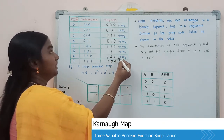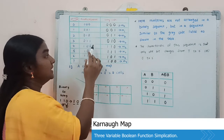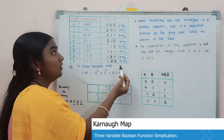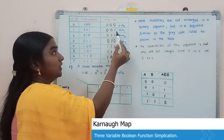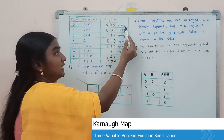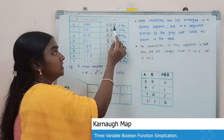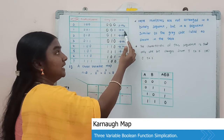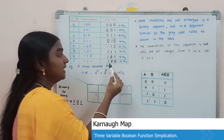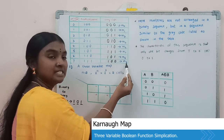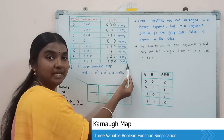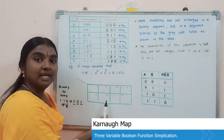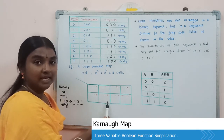In this manner, each binary sequence is converted to its Gray code. For each respective Gray code, we write the min terms — for binary 000 it represents M0, for 001 it represents M1. As per this Gray code sequence, we arrange the min terms in the three-variable K-map.